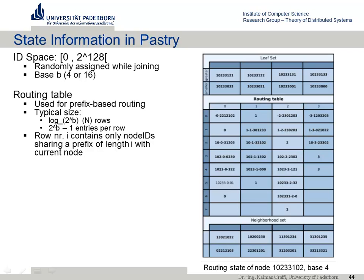The routing table has an ID space from 0 to 2^128. The base is the character set size — in this example the base is 4, so characters are from 0 to 3 (typically it's 16, but 4 is easier to show). The routing table for this example node has the ID 0, 2, 3, 3, 1, 0, 2. The leaf set contains nodes with IDs just slightly higher and just slightly lower than this node's ID.